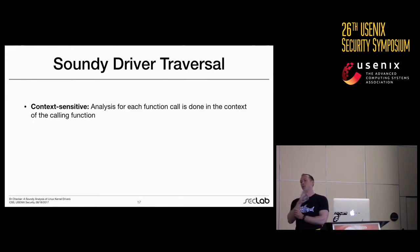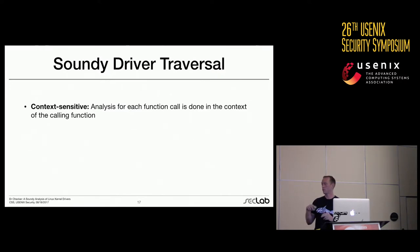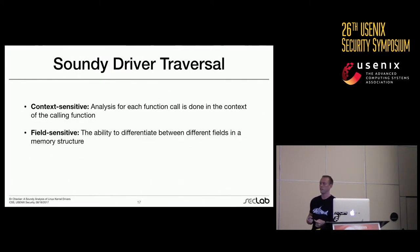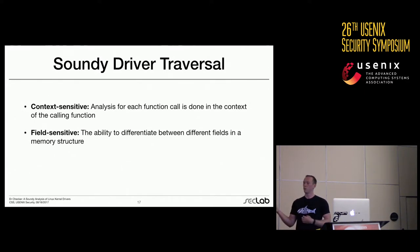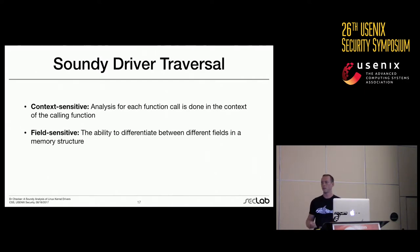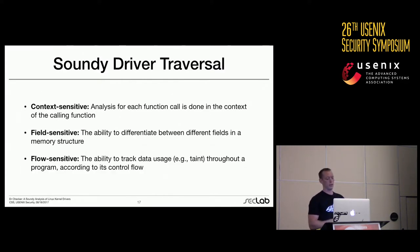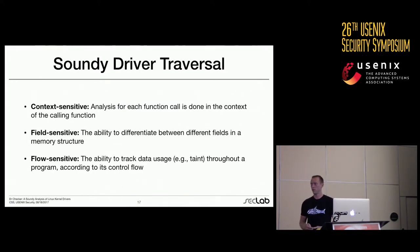There were three core things we wanted in our static analysis. First, context sensitivity — if a function is called from multiple different call points, we recognize that and our output lets users trace exactly how to reproduce a bug. Second, field sensitivity — there are tons of structures in kernel code, and our analysis is field-sensitive, so it tells you the exact field in a structure that caused the vulnerability, reducing false positives. Third, flow sensitivity — we propagate taint all the way through the control flow graph so that when we reach a bug, we can output the entire data flow that caused it.